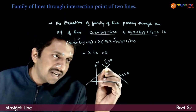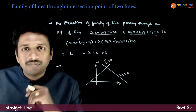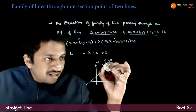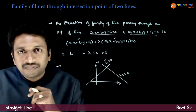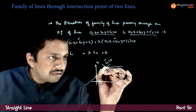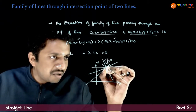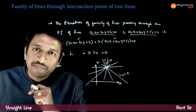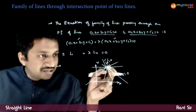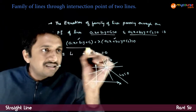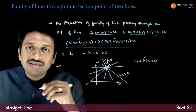Let us say that these two lines are intersecting at a point. Obviously, if they are not parallel to each other, they will intersect at some point. As you can see, from this intersection point there are many lines — a family of infinite lines — which can pass through it. The equation of all these lines looks like L1 + λL2 = 0, where λ is a parameter.